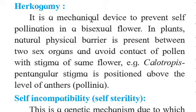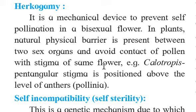So herkogamy is a mechanical or physical device to prevent self-pollination in a bisexual flower. A natural physical barrier is present between the two sex organs — stamen and carpel — to avoid contact of pollen with the stigma of the same flower, so that the same flower's pollen grain cannot make contact with its own stigma.